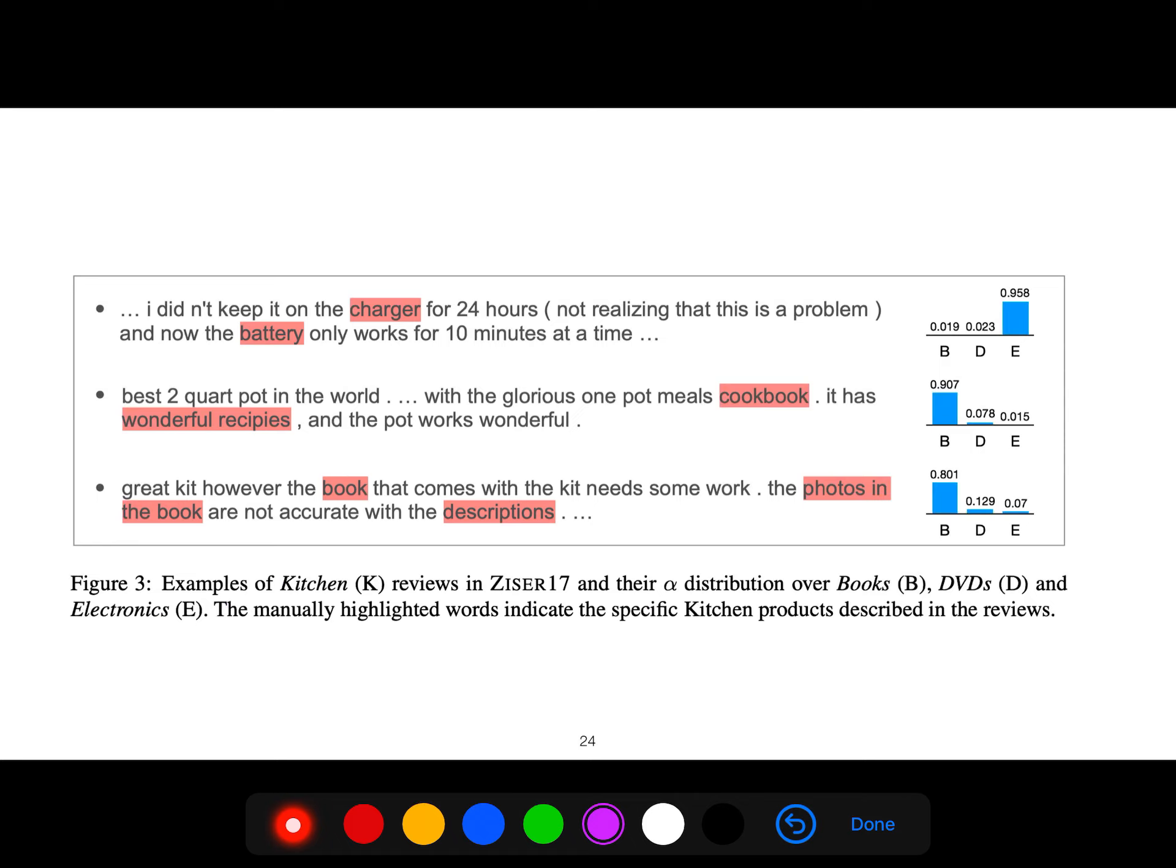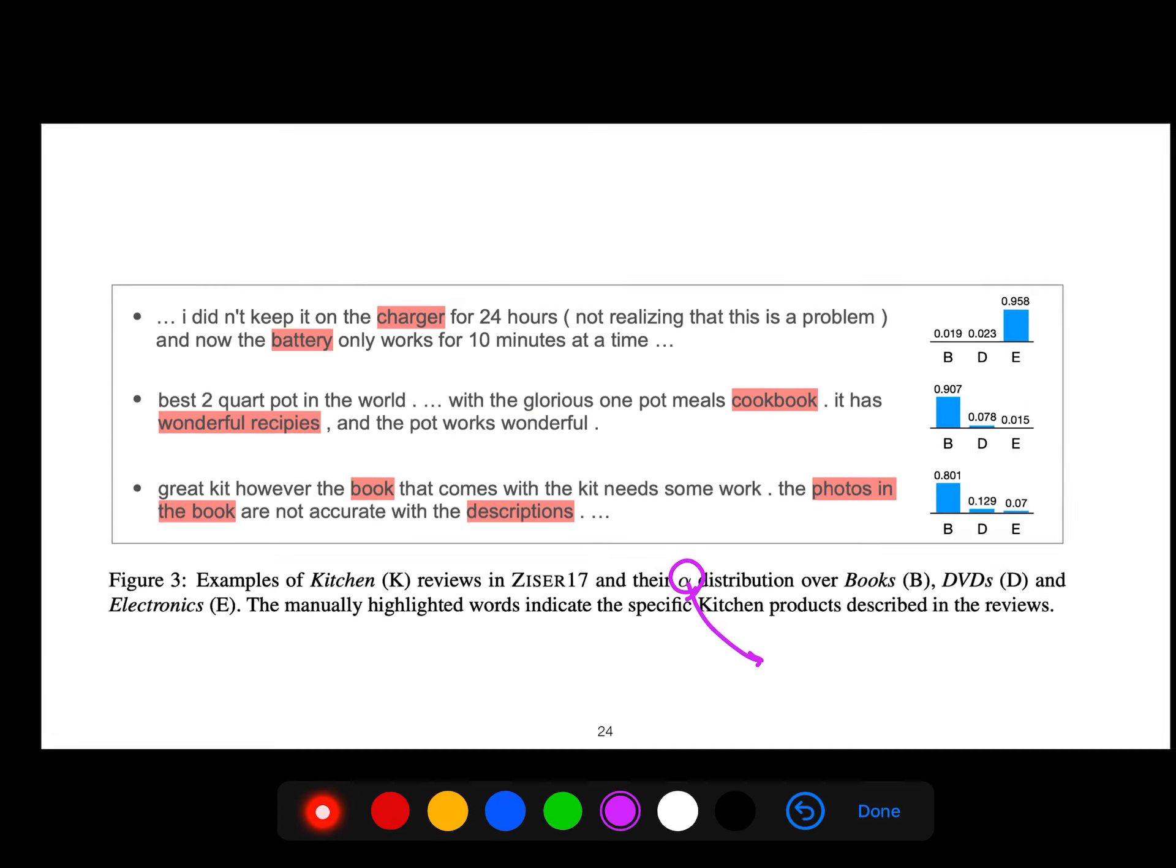So this is an example of kitchen reviews and their α distribution. You know we needed α in that mixture of expert - if you remember that is like attention.